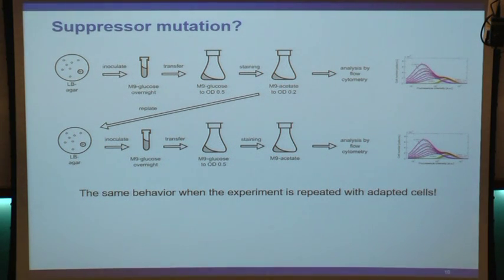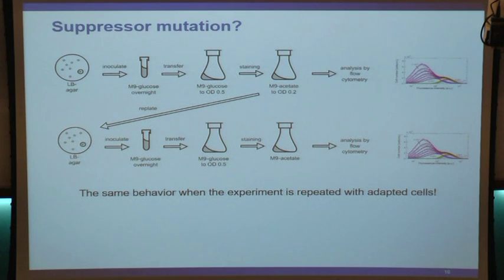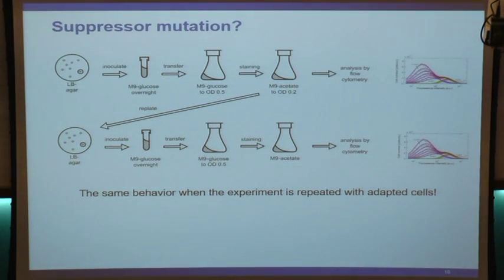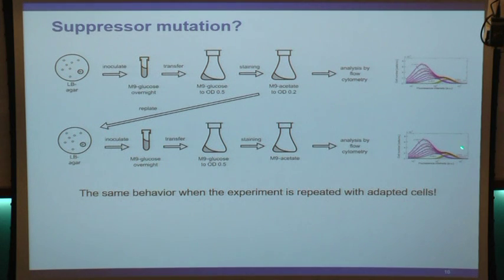What does this mean? If this behavior were due to two different genotypes, what would we have expected? The non-growing population would not have been seen again, because the growing one would have outgrown it. If it were a distinct genotype and we went through the whole experiment again, we would have seen only growing cells. So repeating the experiment and getting the same behavior provides evidence that the two populations must be due to the same genotype.